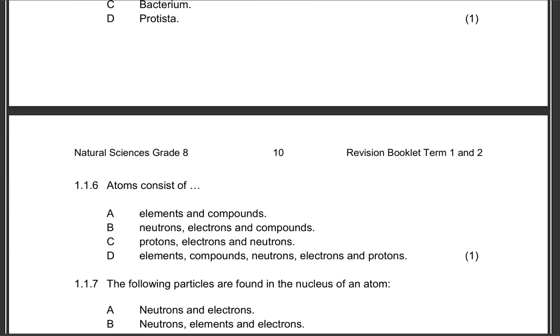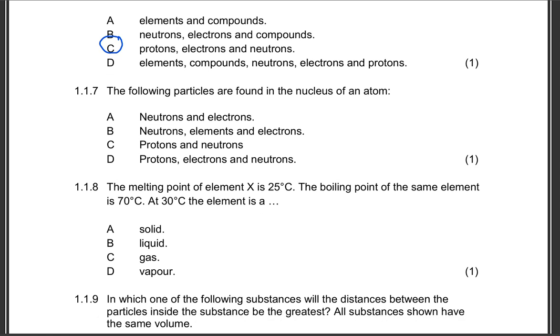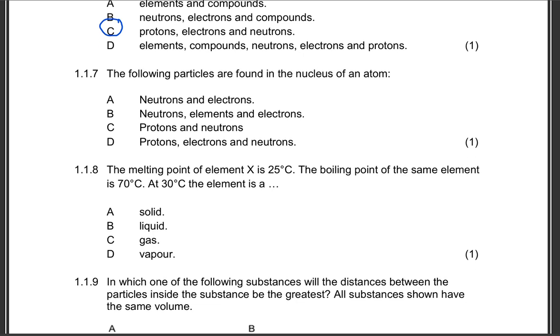Question 1.1.6: Atoms consist of what? Do they consist of elements and compounds, neutrons, electrons, and compounds, protons, electrons, and neutrons, or elements, compounds, neutrons, electrons, and protons? The correct answer for 1.1.6 is option C. Atoms consist of protons, electrons, and neutrons. Protons are positively charged, the electrons are obviously negatively charged, and neutrons are neutral.